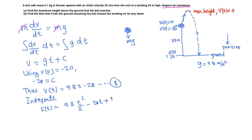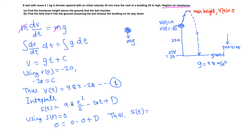Integrating gives s(t) = 4.9t² minus 20t plus d, where d is the constant of integration. Using the initial position s(0) equals 0, we get d equals 0. So the position function simplifies to s(t) = 4.9t² minus 20t. Call this equation 2.